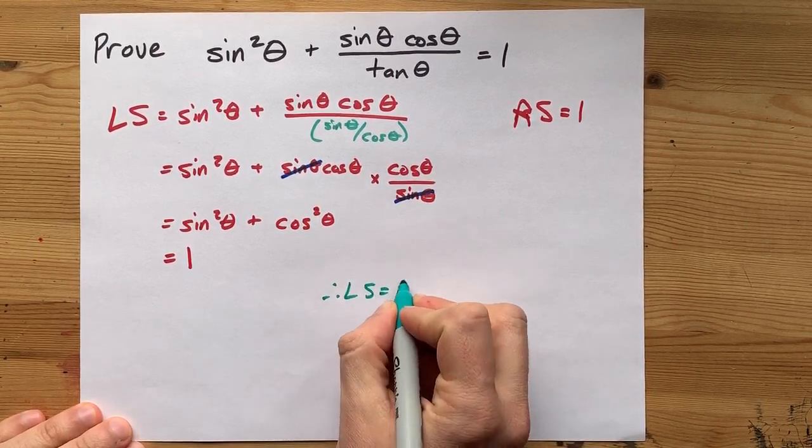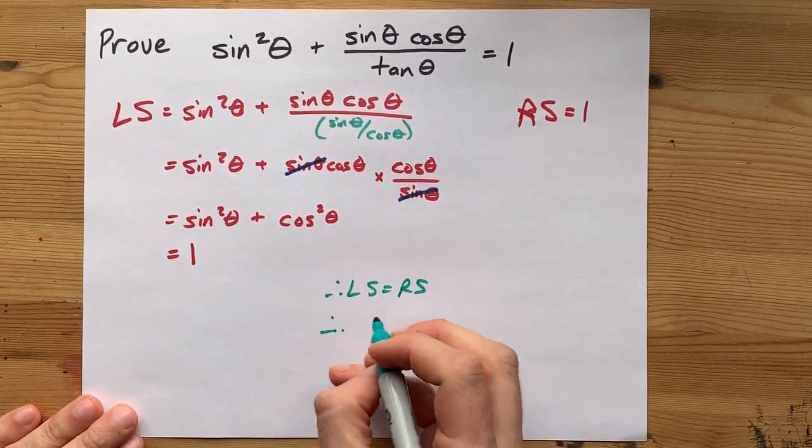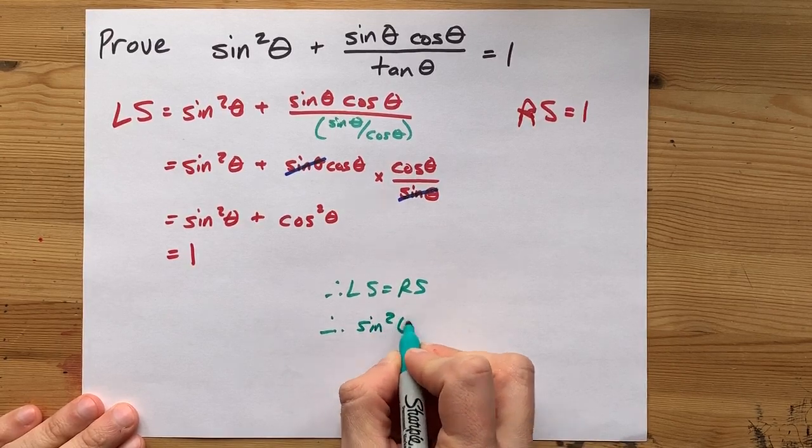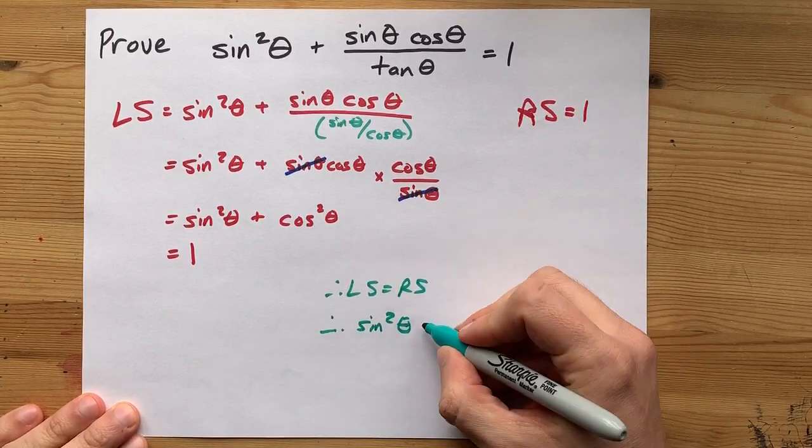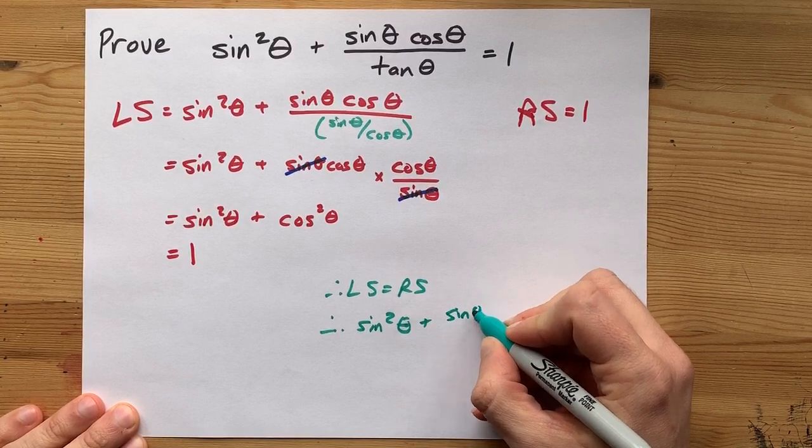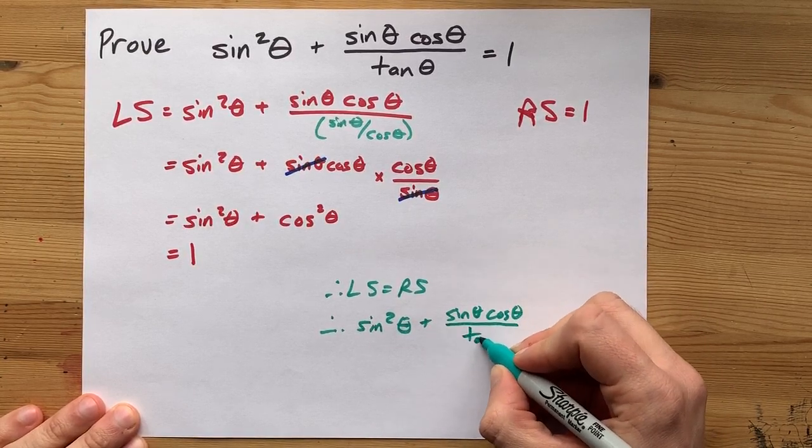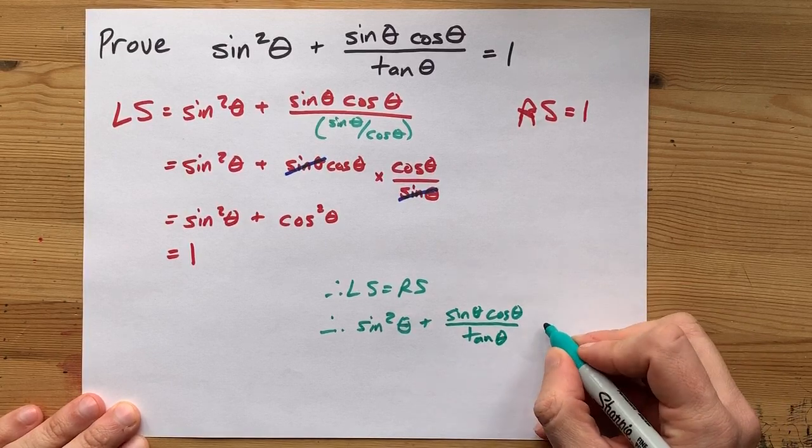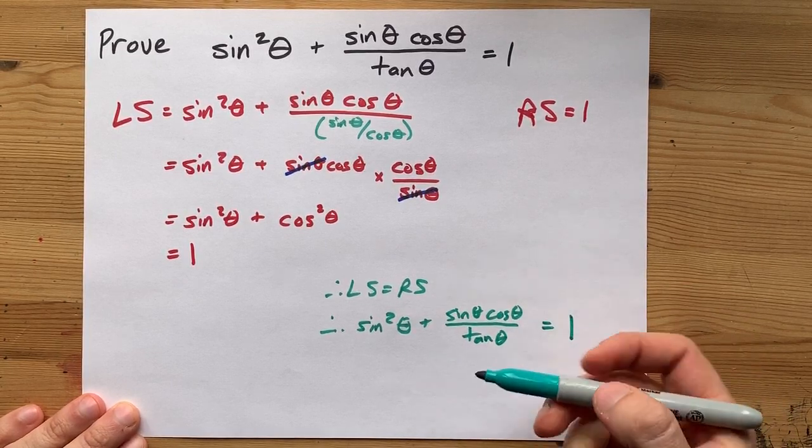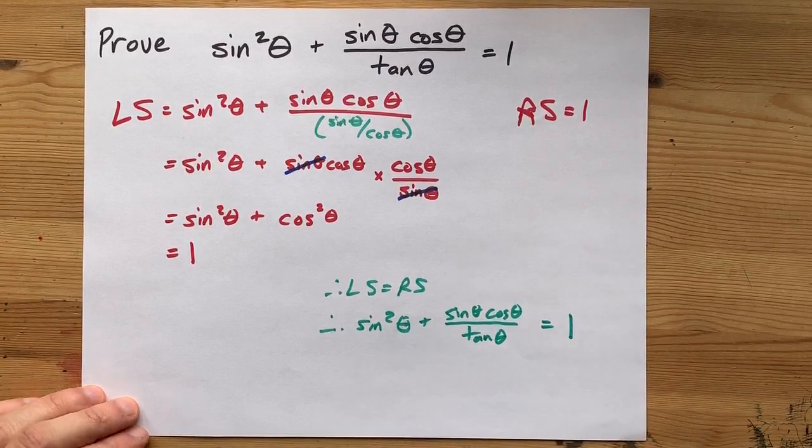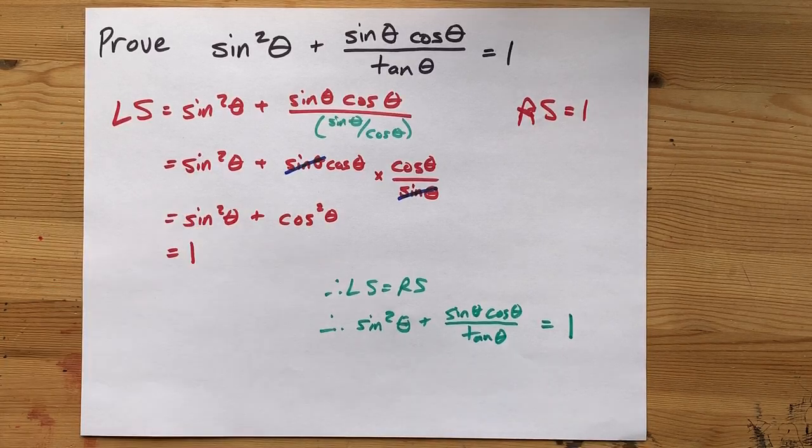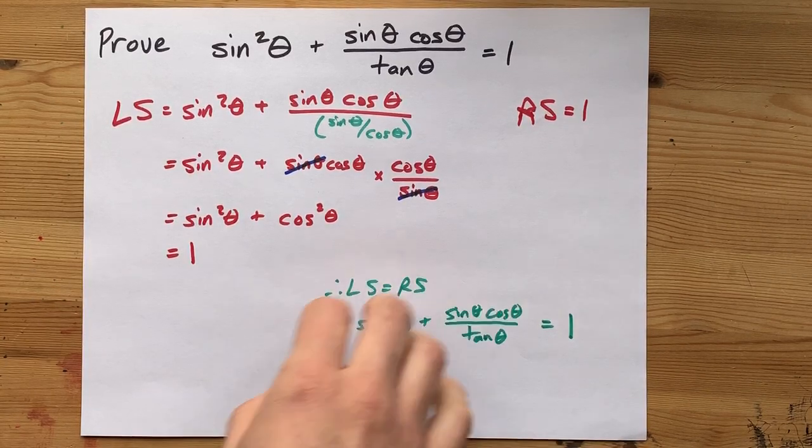Therefore, the left side equals the right side. And also, the sine squared of an angle plus the sine of that angle times the cos of that angle, all divided by the tan of that angle, ends up canceling to 1 for every angle you can think of. Tough to believe, but very true. Best of luck.